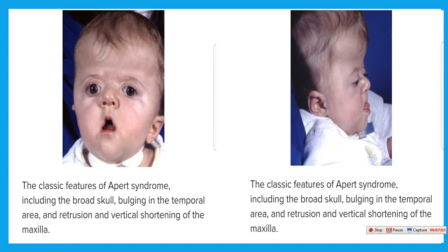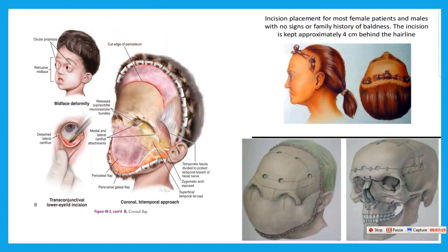Those patients with Apert syndrome and Crouzon syndrome need LeFort III osteotomy to correct the mid-facial area, and also LeFort I osteotomy to correct the retrusion of the maxilla. As in this picture, the LeFort III osteotomy incision is by coronal flap — a few millimeters behind the hairline — and then correction of the mid-facial area and stabilization by mini plate and screw. This is the LeFort III osteotomy, most commonly used for craniosynostosis syndrome showing premature closure of the sutures of the skull.